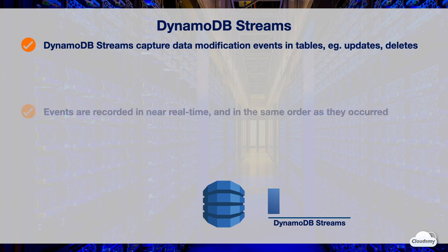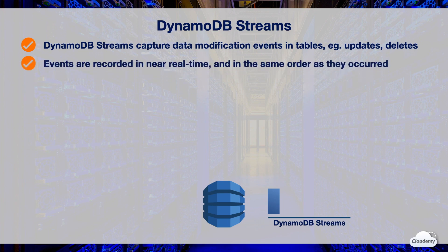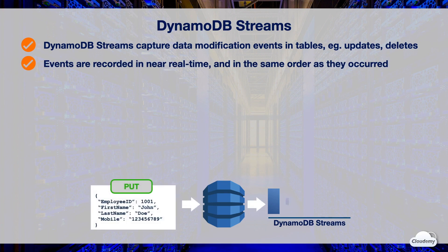Data change events are recorded in the stream in near real time, in the same order as the events occurred. For example, when a new item is added to the table, the stream captures an image of the entire item including all of its attributes.